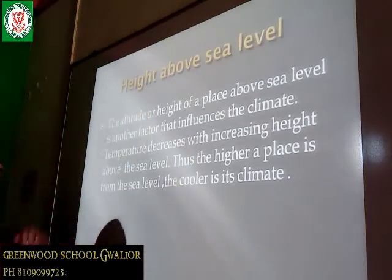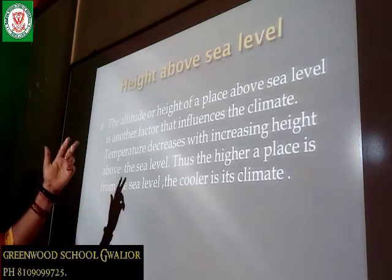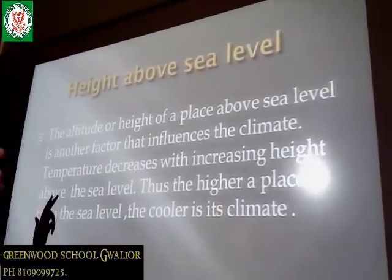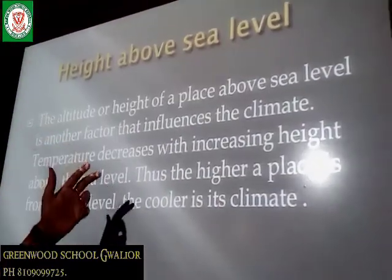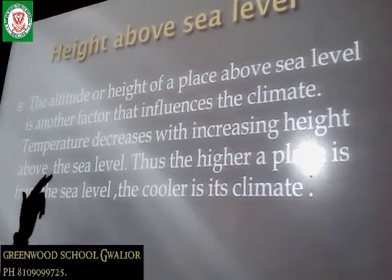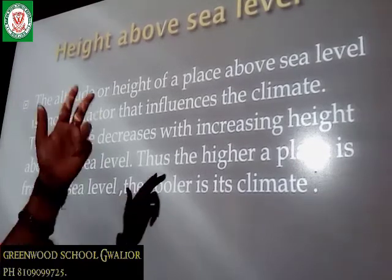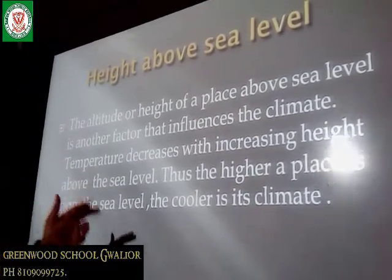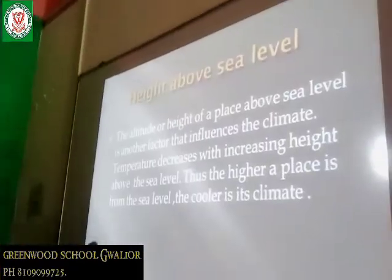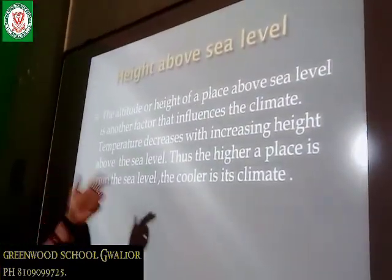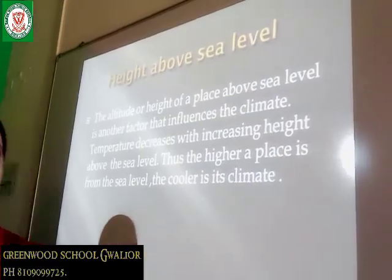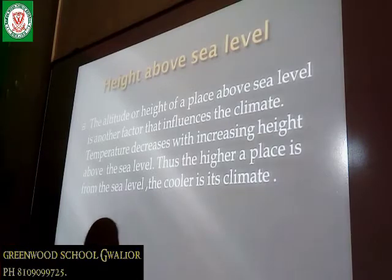Height above sea level. The height of a place above sea level is another factor that influences the climate. Temperature decreases with increasing height above the sea level. Thus, the higher a place is from the sea level, the cooler is its climate — like hill stations such as Jammu and Kashmir, Shimla, etc.